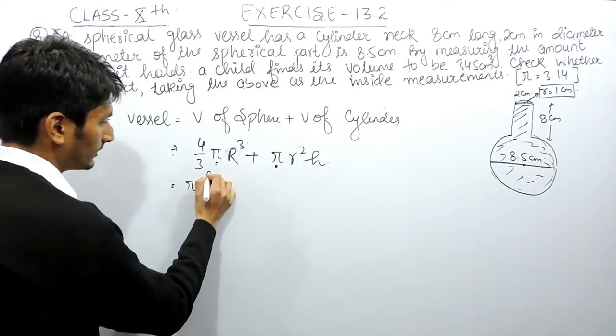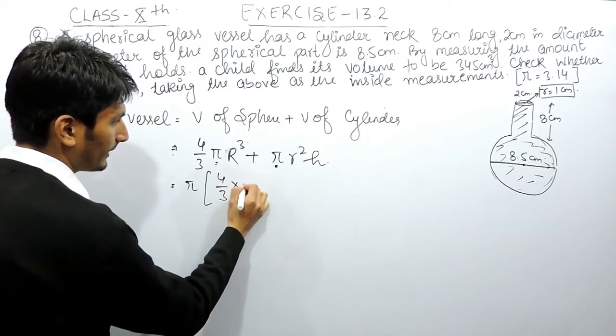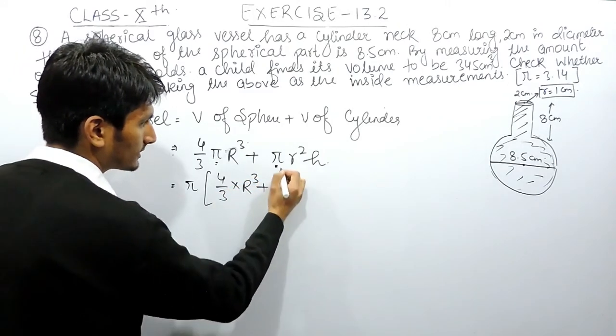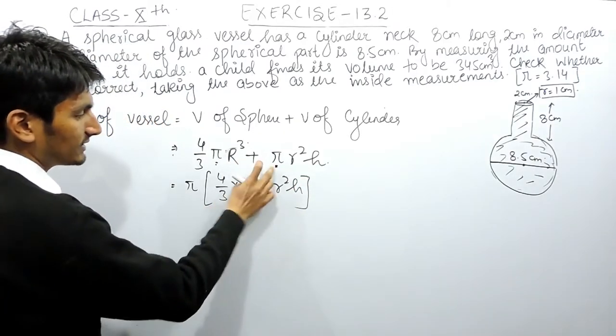In both cases pi is common, so I can take pi as common. So the value of 4 upon 3 multiplied by R cube plus r square h will remain inside the bracket and pi is taken out.